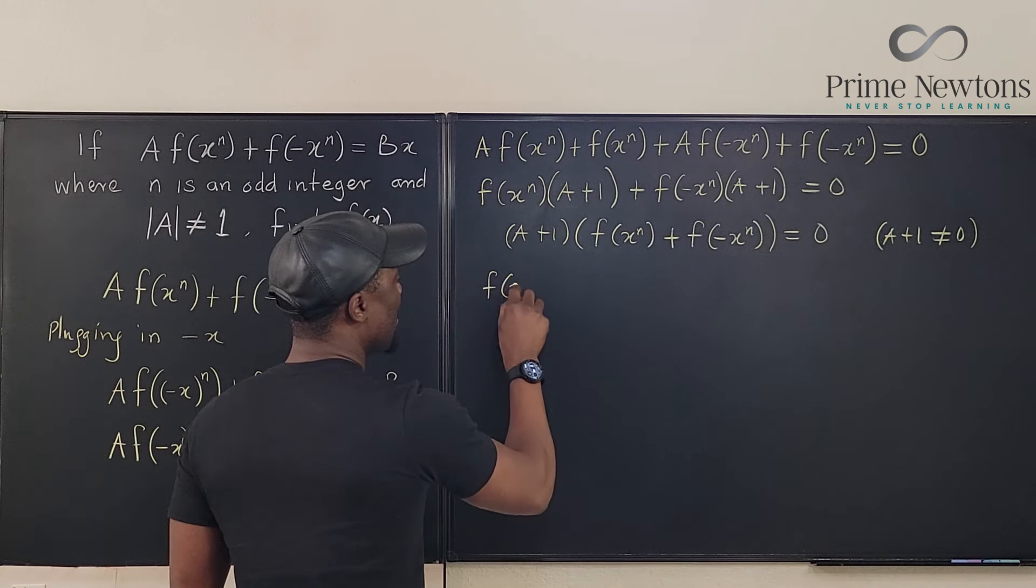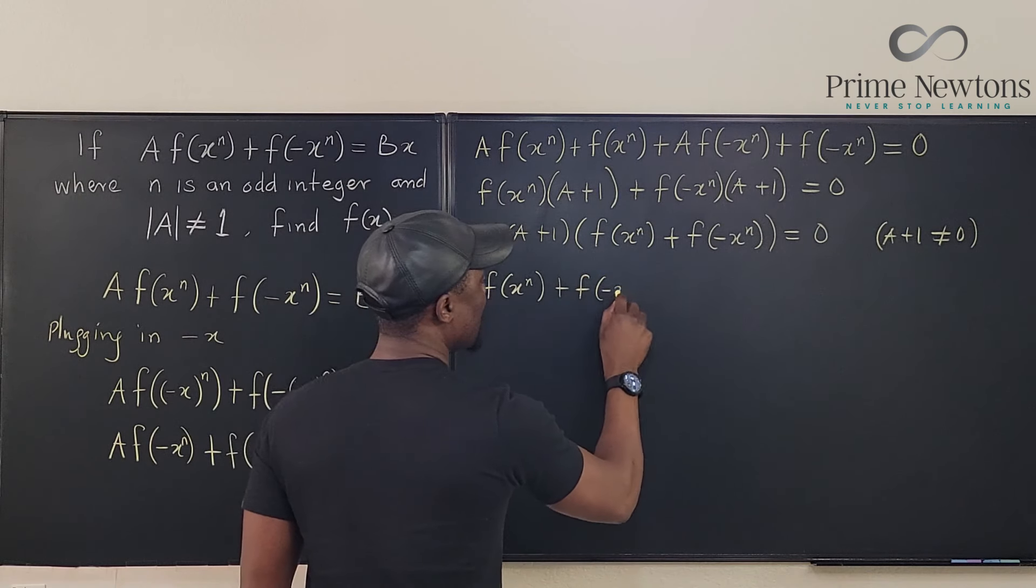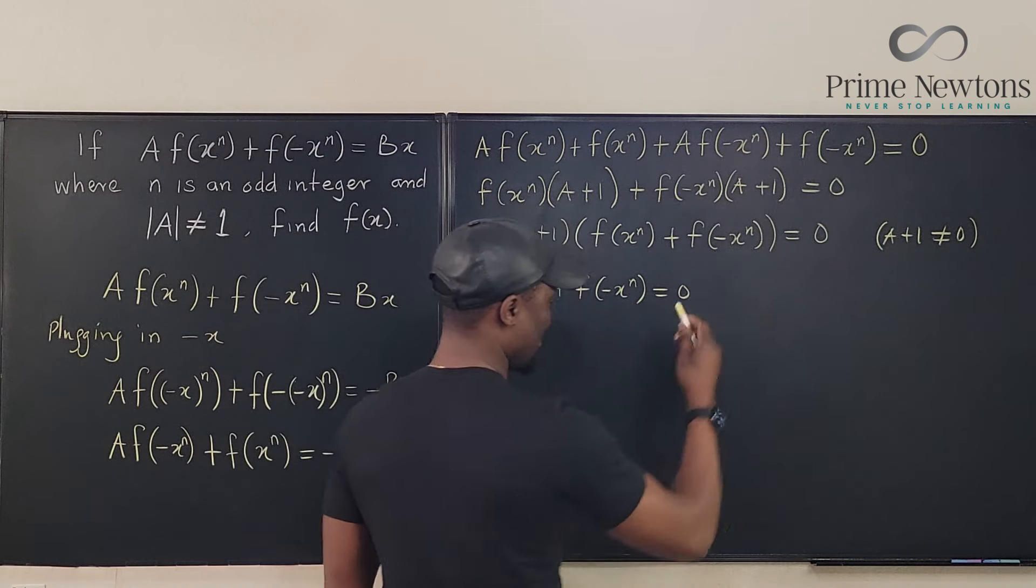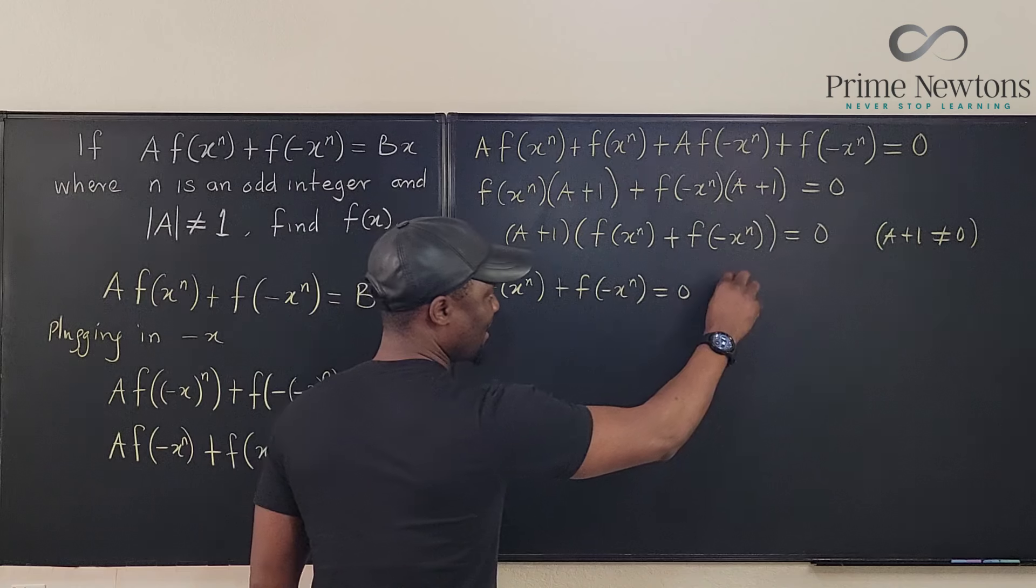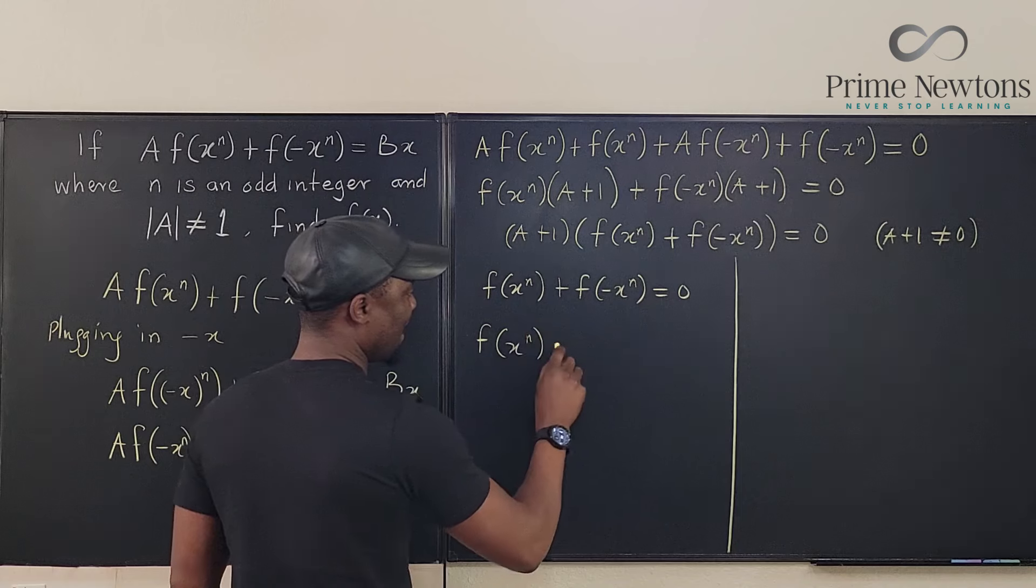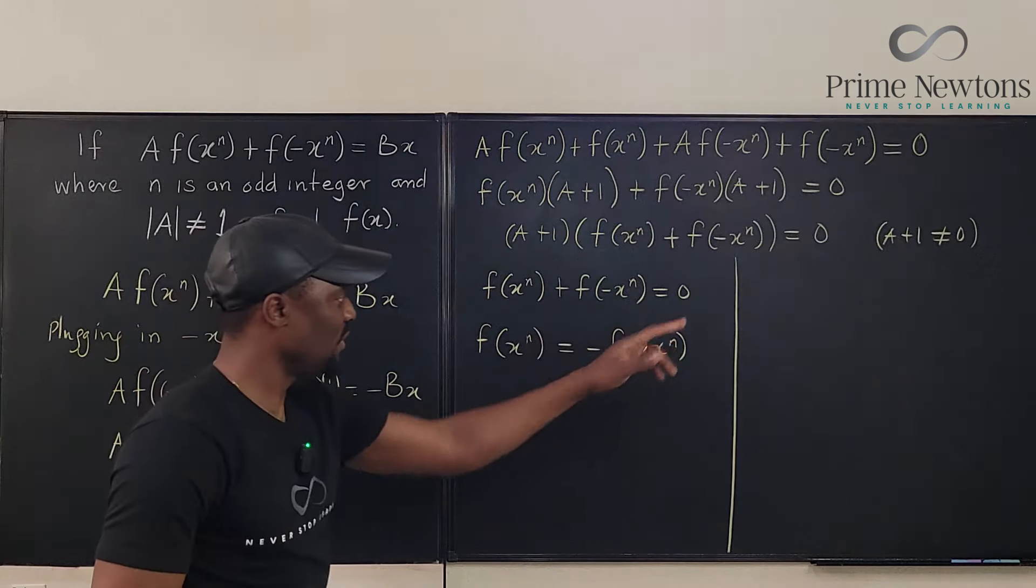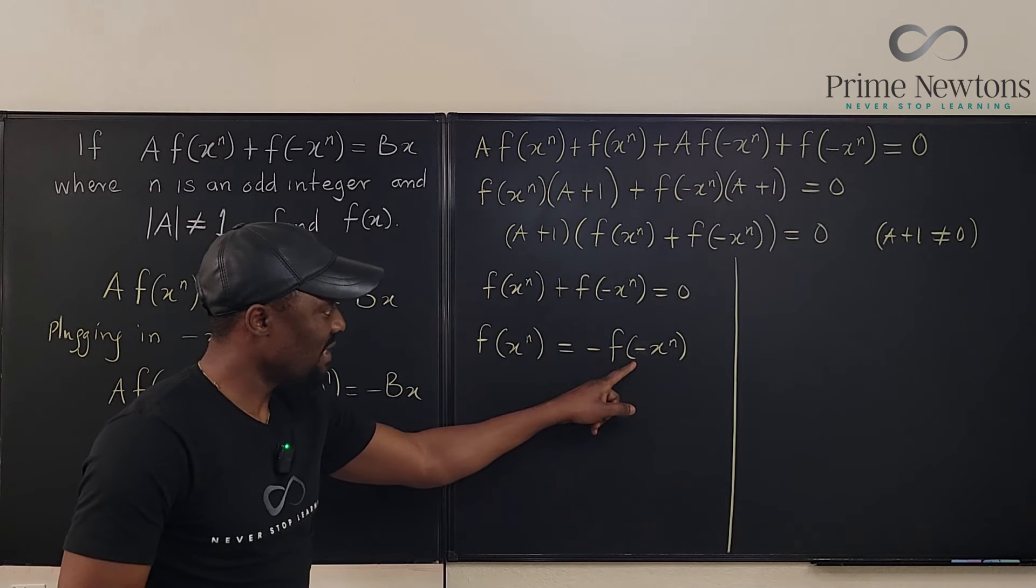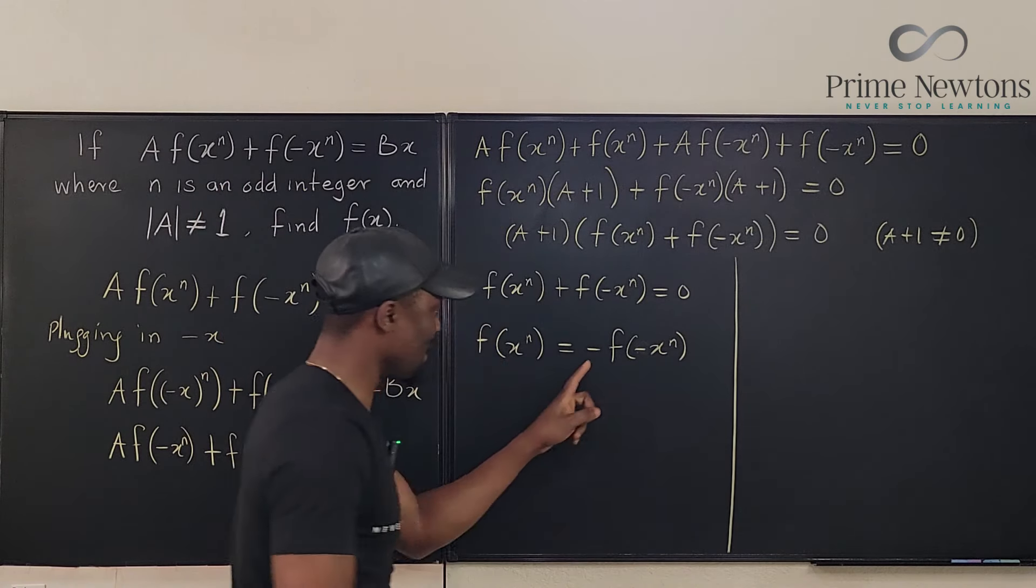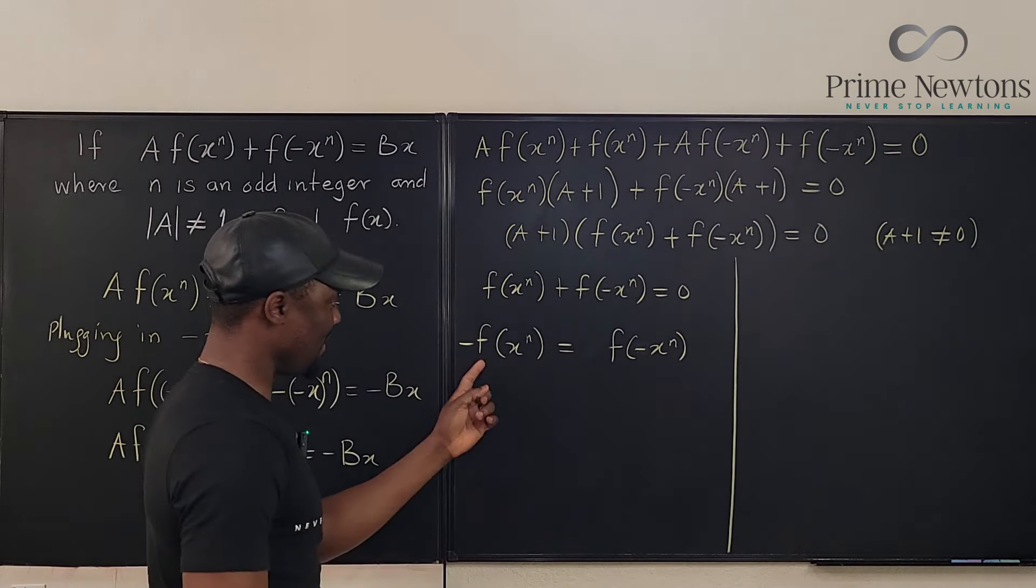So this equals zero, which means, maybe I should go this way. Now let's divide the board this way. Which means that f(x)^n equals negative f(-x)^n, like that. So we move this over. Actually, I can move this minus sign because I can replace this in the original equation. So I'm going to say that negative of this is this one.